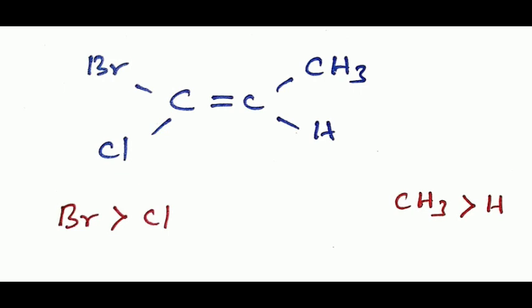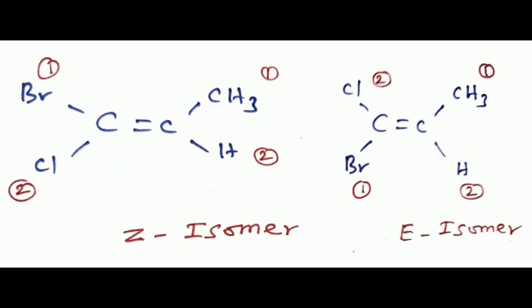In the compound 1-bromo-1-chloropropene: bromine has atomic number 35, chlorine has atomic number 17, therefore bromine has high priority and Cl has low priority. On the next carbon, methyl has atomic number carbon 12, hydrogen 1, therefore methyl has high priority and hydrogen has low priority.